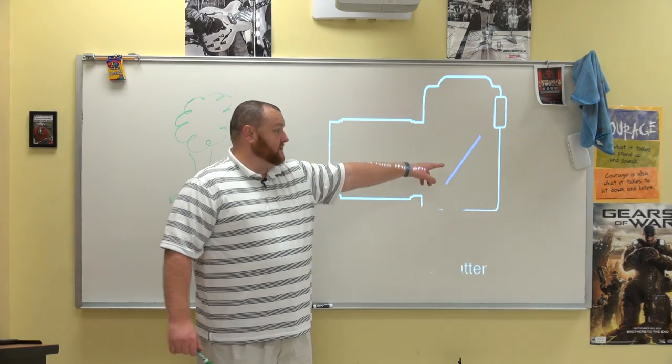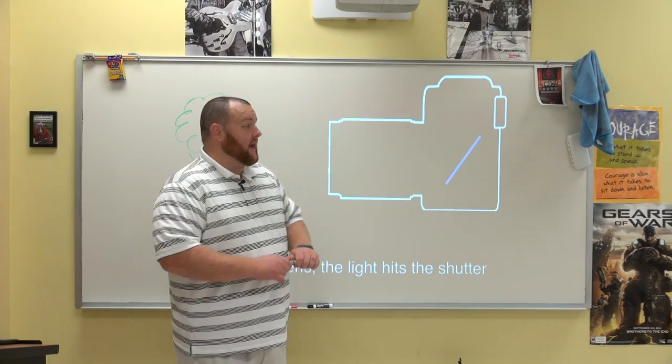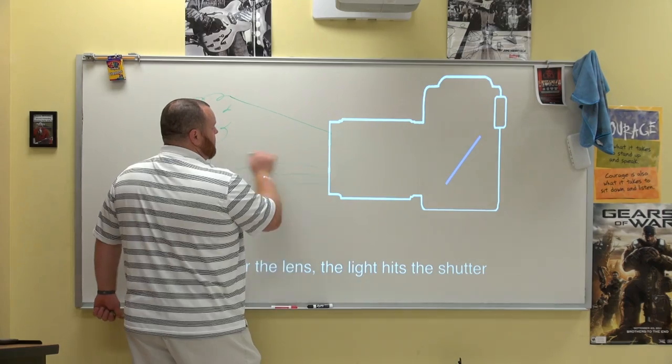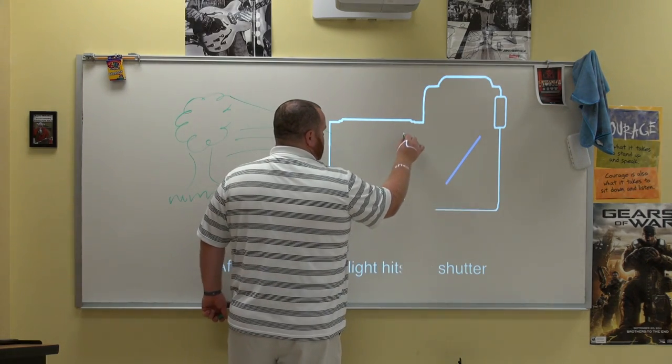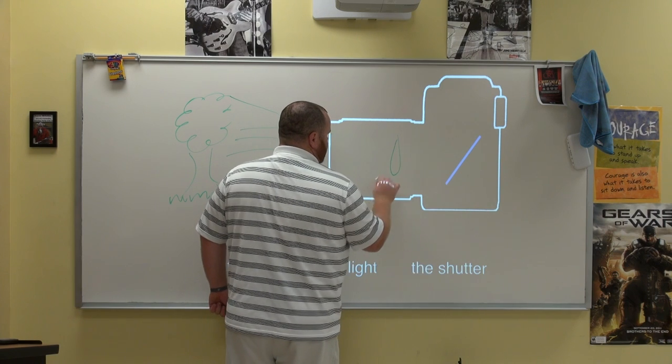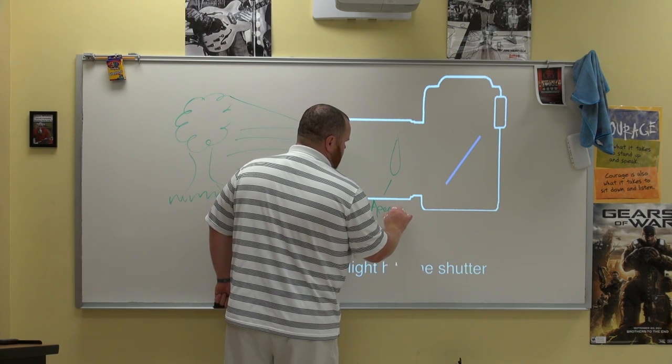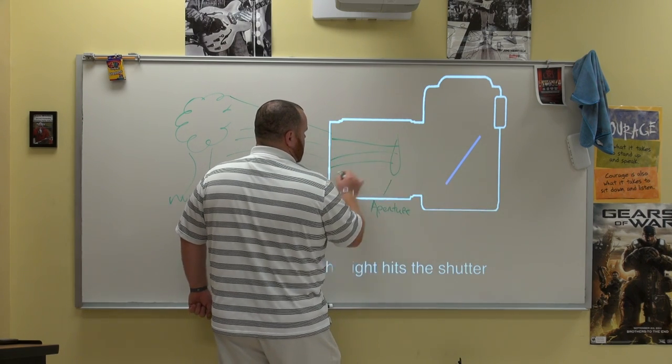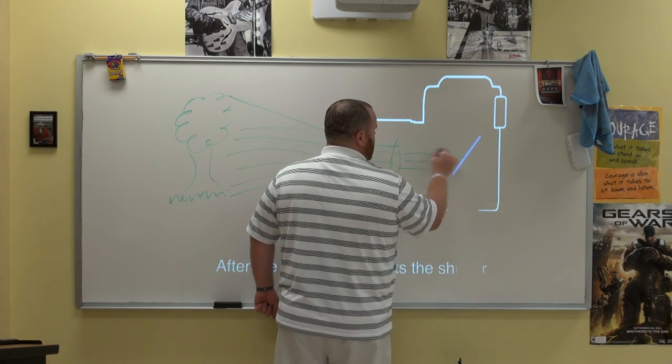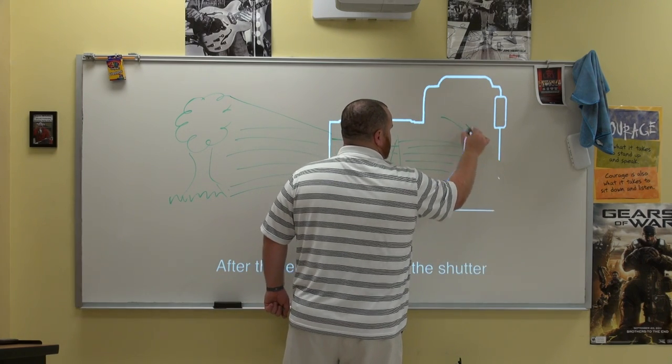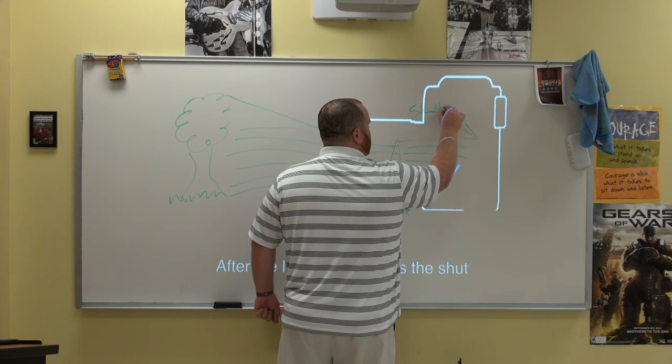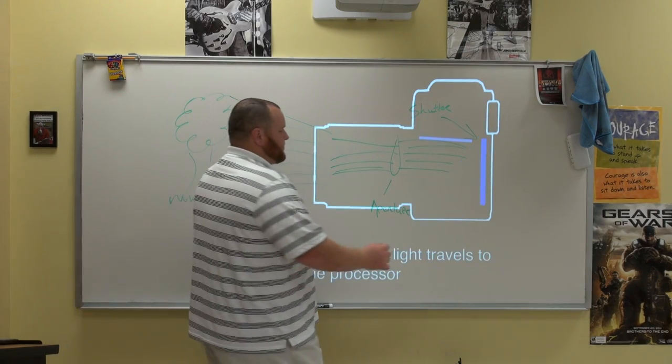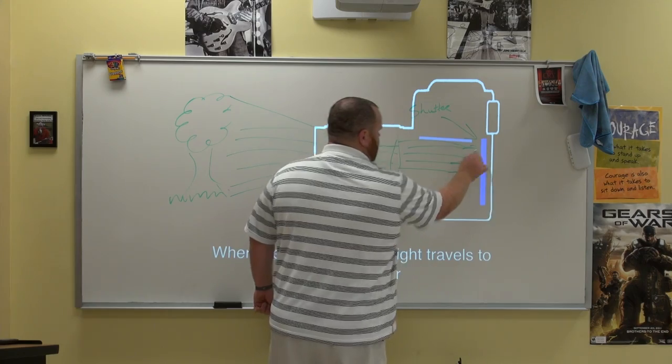So you have the lens that has the aperture. Inside the body of the camera is the shutter and the sensor. And again, light comes in. It's a reflection. It comes into the lens where the aperture is. Then hits the shutter. This is the shutter here. And then finally, once the shutter is lifted, gets to the sensor here to create your image.